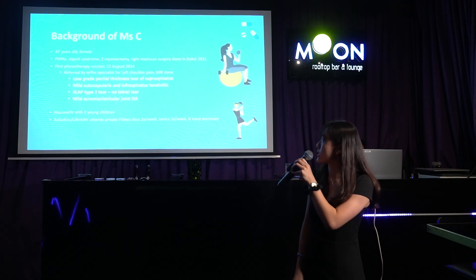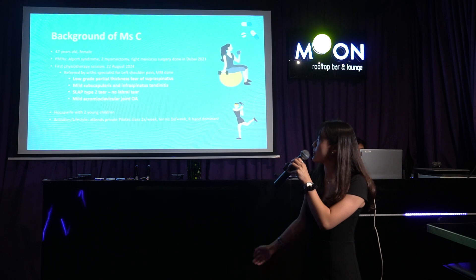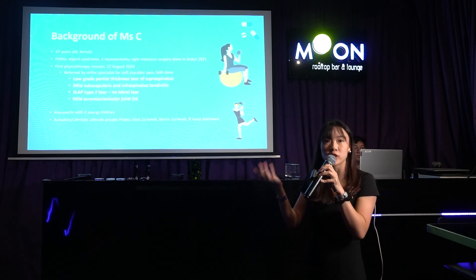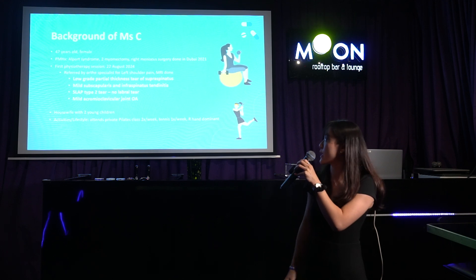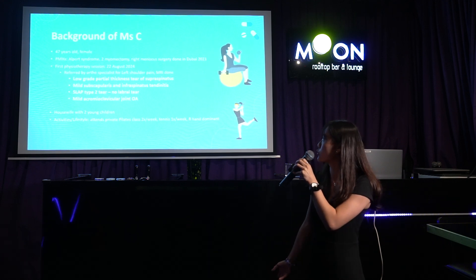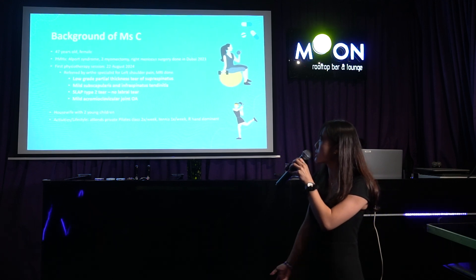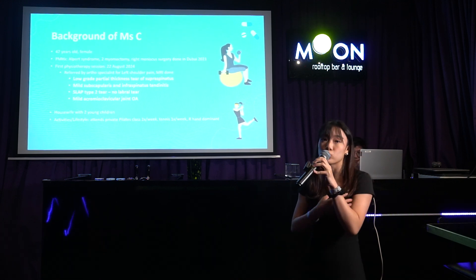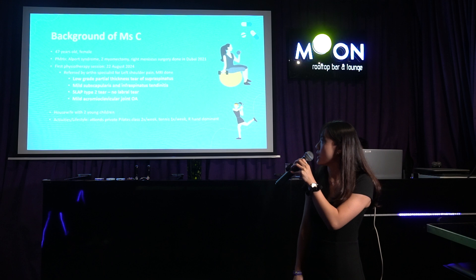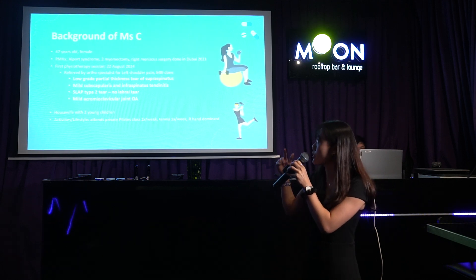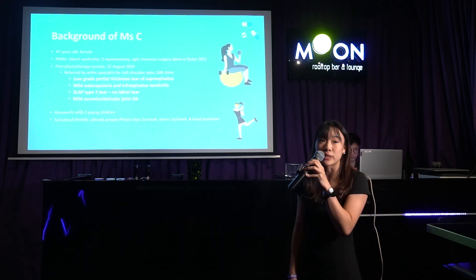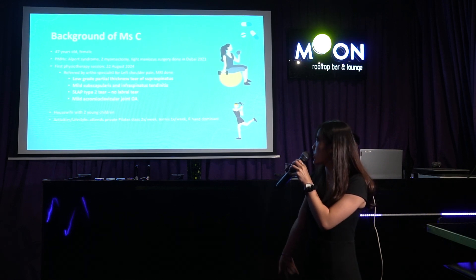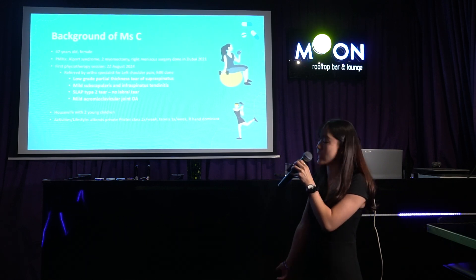My patient, Ms. C, is a 47-year-old female referred by the orthopaedic team for left shoulder pain. MRI showed a low-grade partial thickness tear of the supraspinatus, mild subscapularis and supraspinatus tendinopathy, a SLAP type 2 tear, and mild ACJ changes. She first came to see me on 22nd August. She is a housewife who attends Pilates classes and plays tennis.